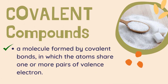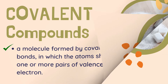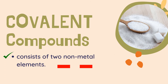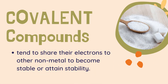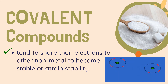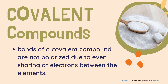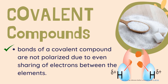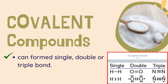Now let us move on to covalent compounds. A covalent compound is a molecule formed by covalent bonds in which atoms share one or more pairs of valence electrons. Covalent compounds consist of two non-metal elements. Covalent compounds tend to share their electrons with other non-metals to become stable. The bonds of a covalent compound are not polarized due to the even sharing of electrons between elements. Covalent compounds can form single, double, or triple bonds.